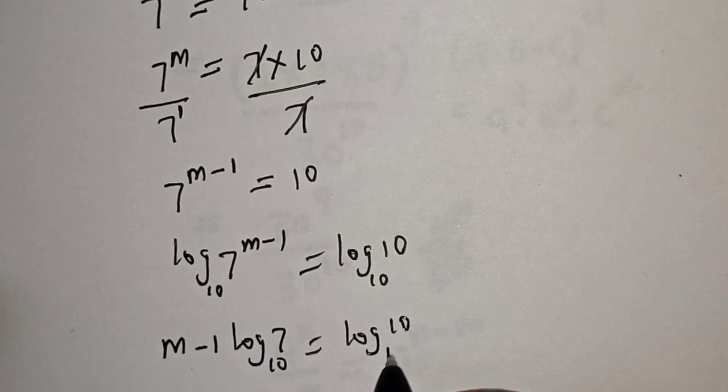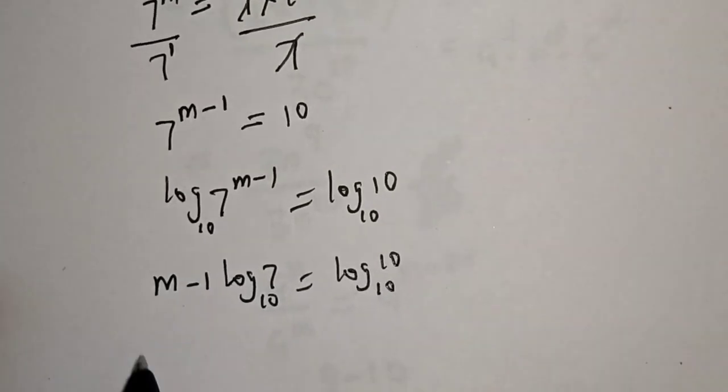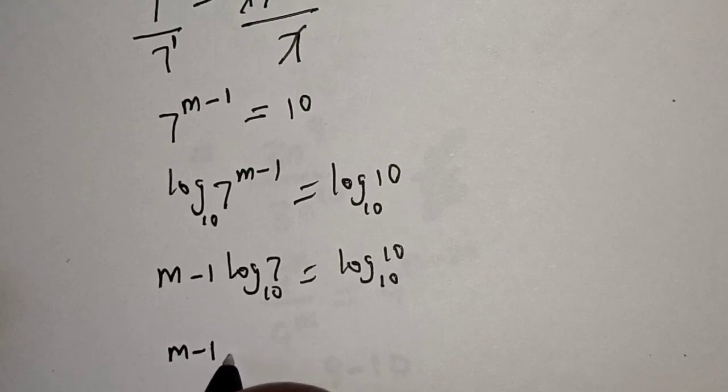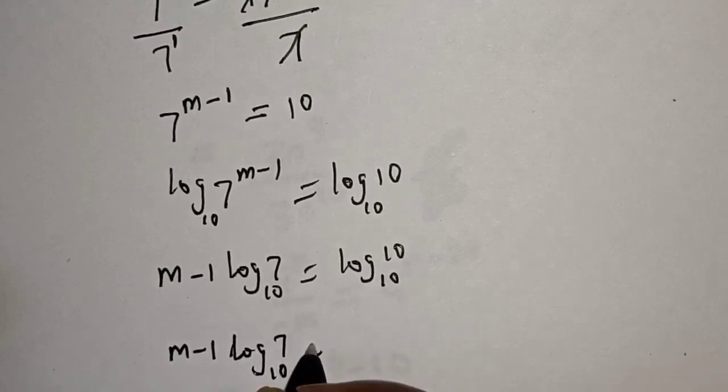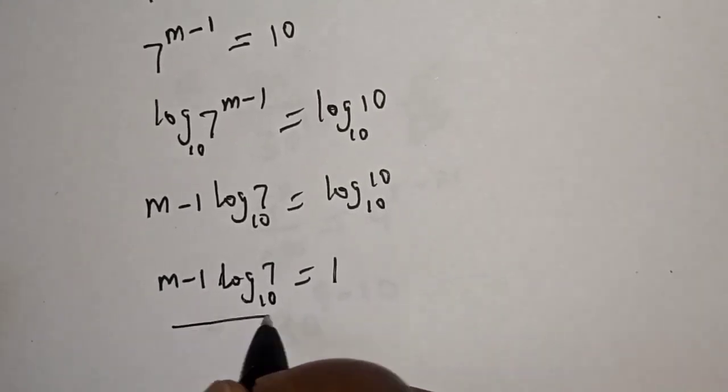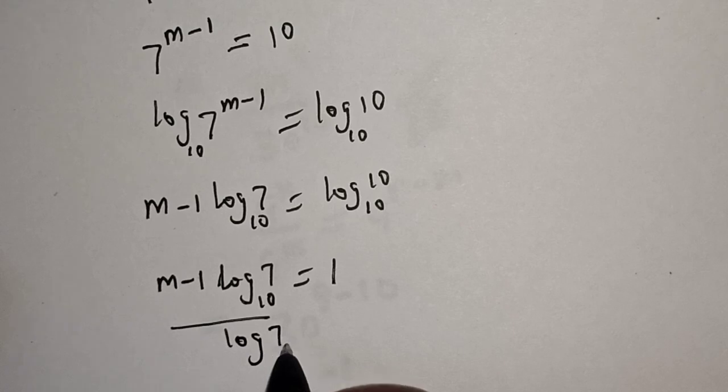log 10 base 10, and we know log 10 base 10 is 1. We have m minus 1 log 7 base 10 is equal to 1. Now let's divide both sides by log 7 base 10.